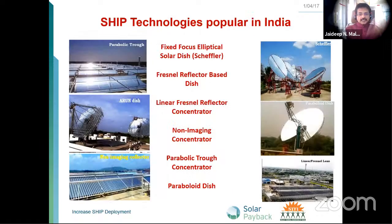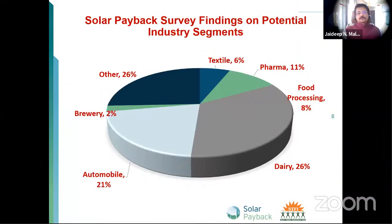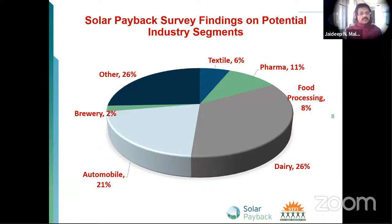This is the Direct Normal Irradiance map of India. The northern Ladakh region and northern Gujarat and western Rajasthan have very good DNI, offering strong potential for the SHIP market. There are about six technologies popular in India, most of them successful with valuable learnings. Solar Payback findings show dairy processing, food processing, pharmaceutical, and brewery combined constitute about 50 percent of market demand today — a strong starting point for SHIP development in India.